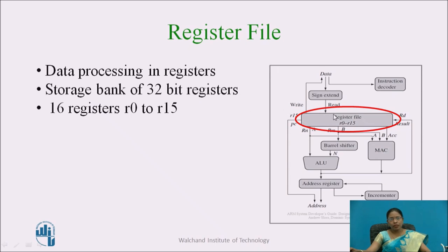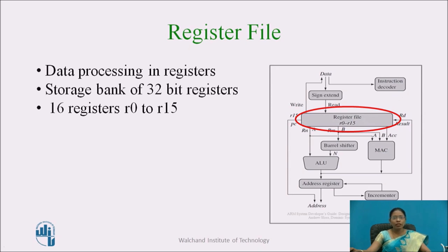The register bank provides a total of 16 registers from R0 to R15. Different modes exist, and based on those, different registers are active. In user mode, the 16 registers R0 to R15 are active and accessible for data processing. Details of the different privileged and non-privileged modes and the register bank will be covered in upcoming videos; this video focuses only on the data flow model.